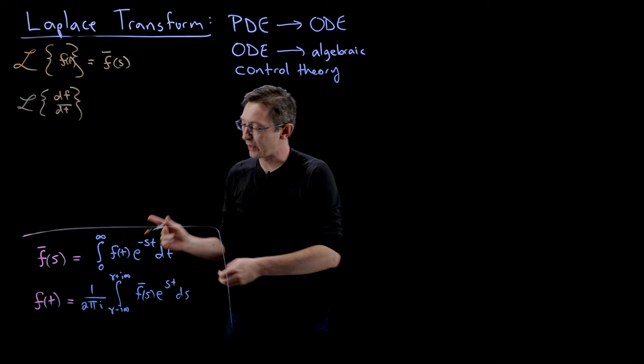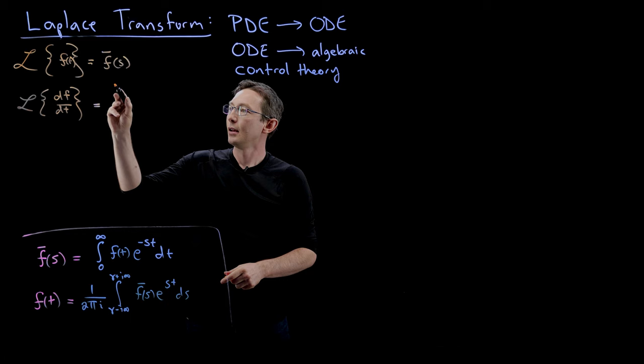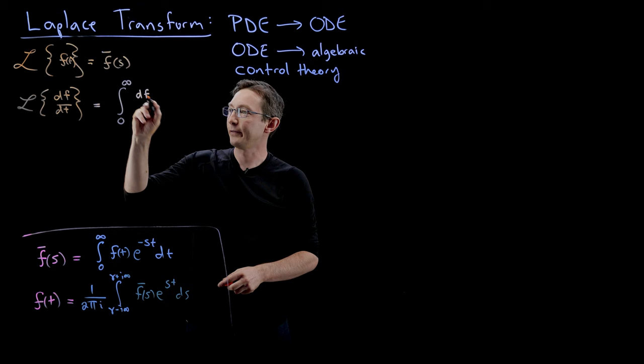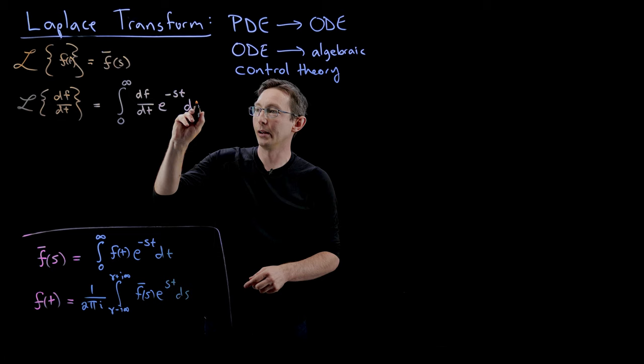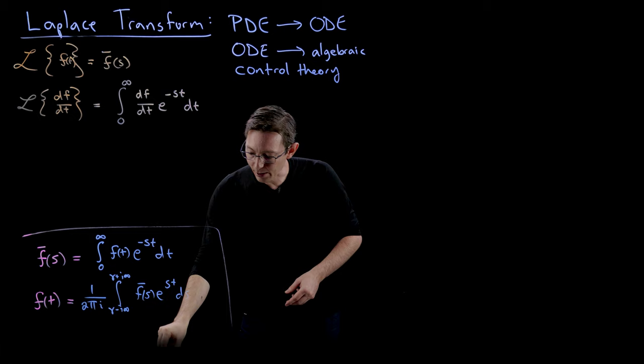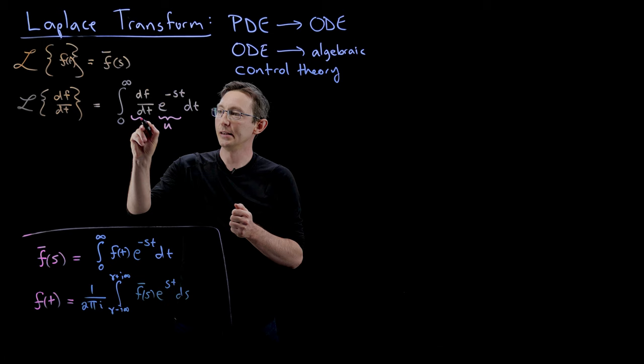So the Laplace transform of dF/dT — I'm literally just going to plug that into the formula — and I'm going to get that this is the integral from 0 to infinity of dF/dT times e to the minus ST, integrating with respect to DT. Now, remember our integration by parts: we're going to say that e to the minus ST is U and dF/dT DT is DV.